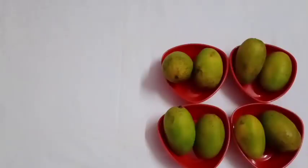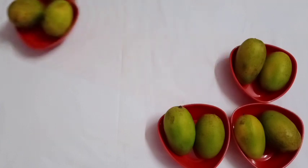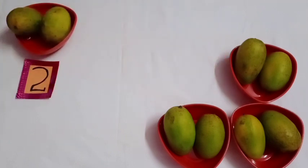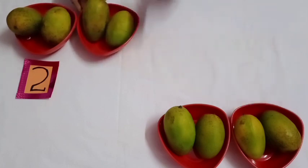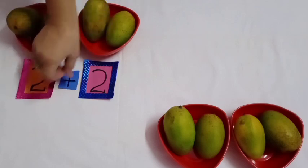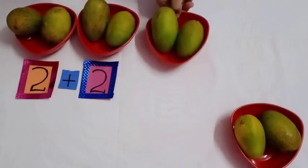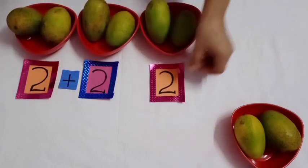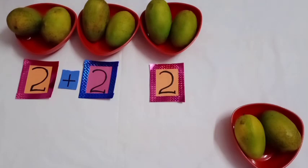Today we will learn how to make groups and add them, and then how to change them into times. Let's start. One day some children were going to a zoo. They had some mangoes with themselves. Let's see how many mangoes they had. One student came with two mangoes. The other one also came with two mangoes. Now there are four mangoes. The third one also had two mangoes. Now there are six mangoes.